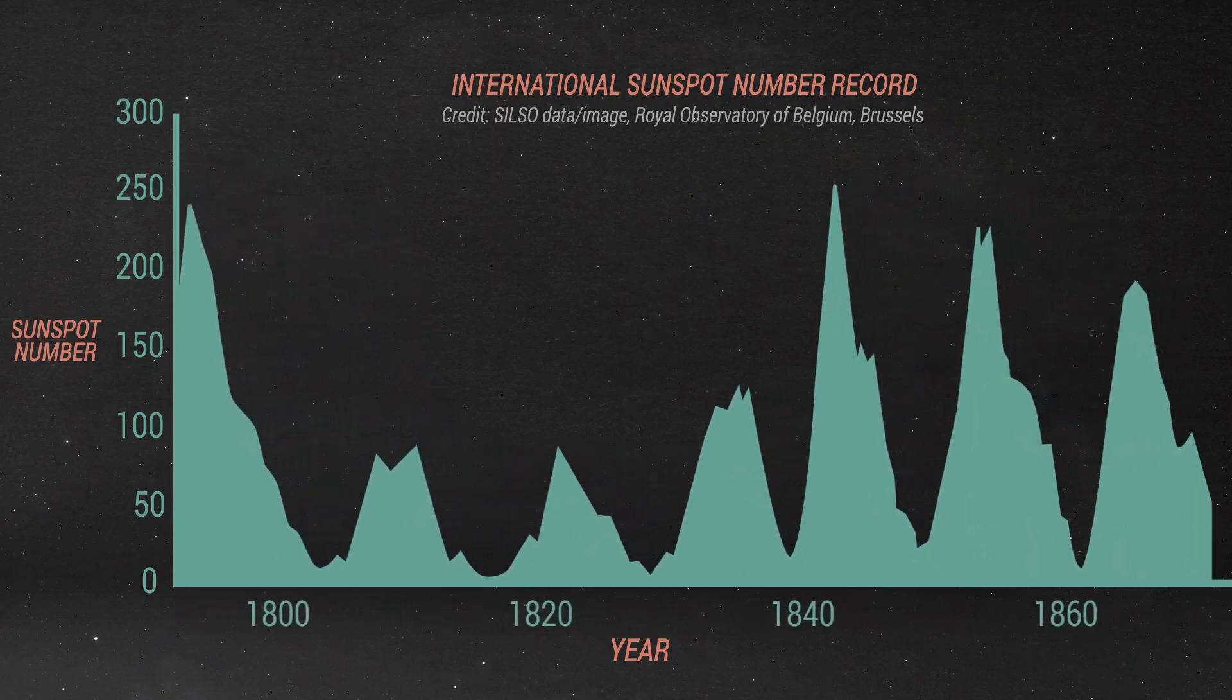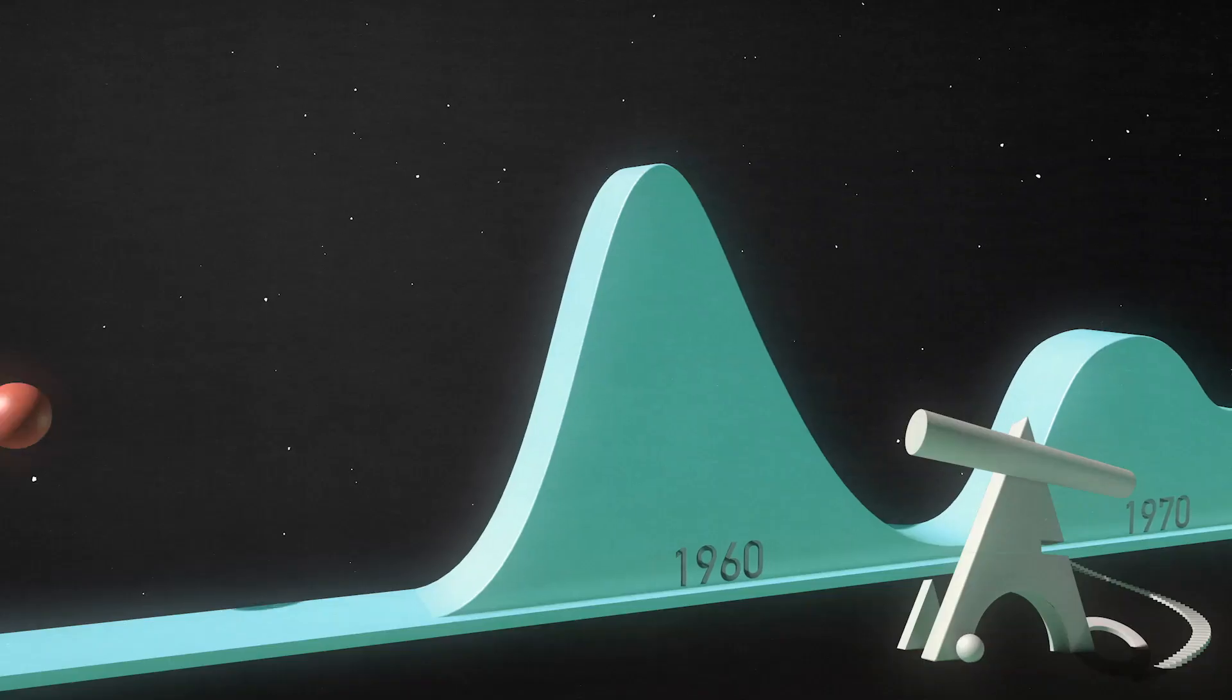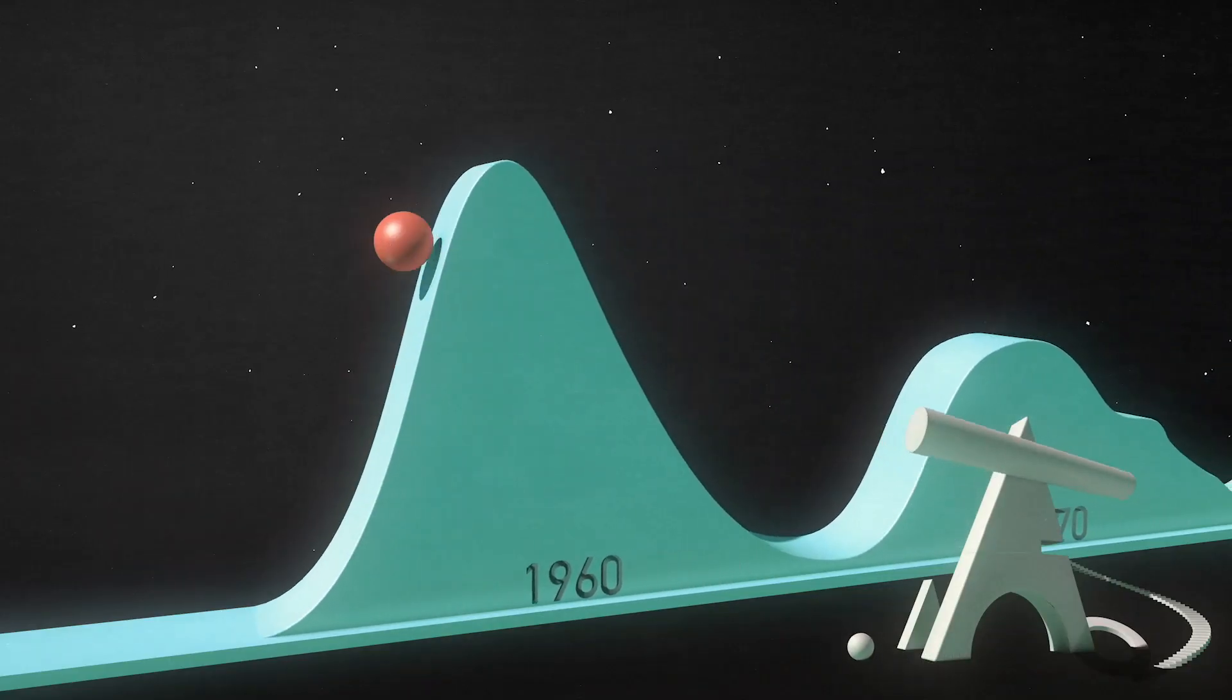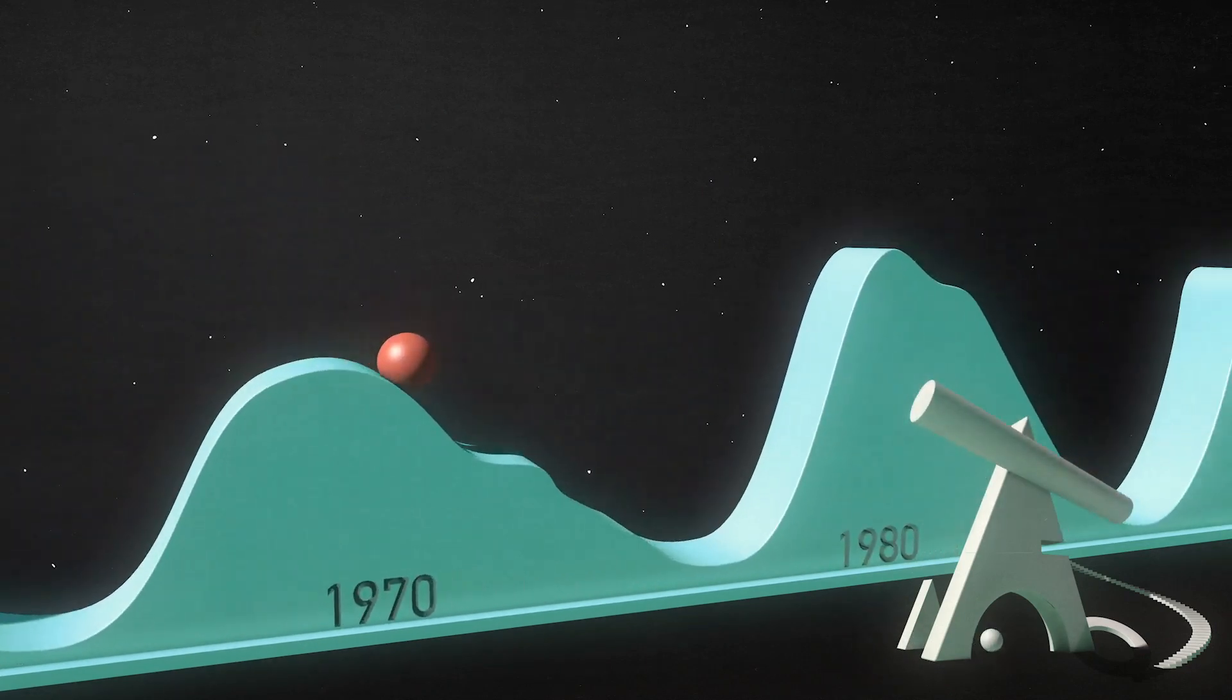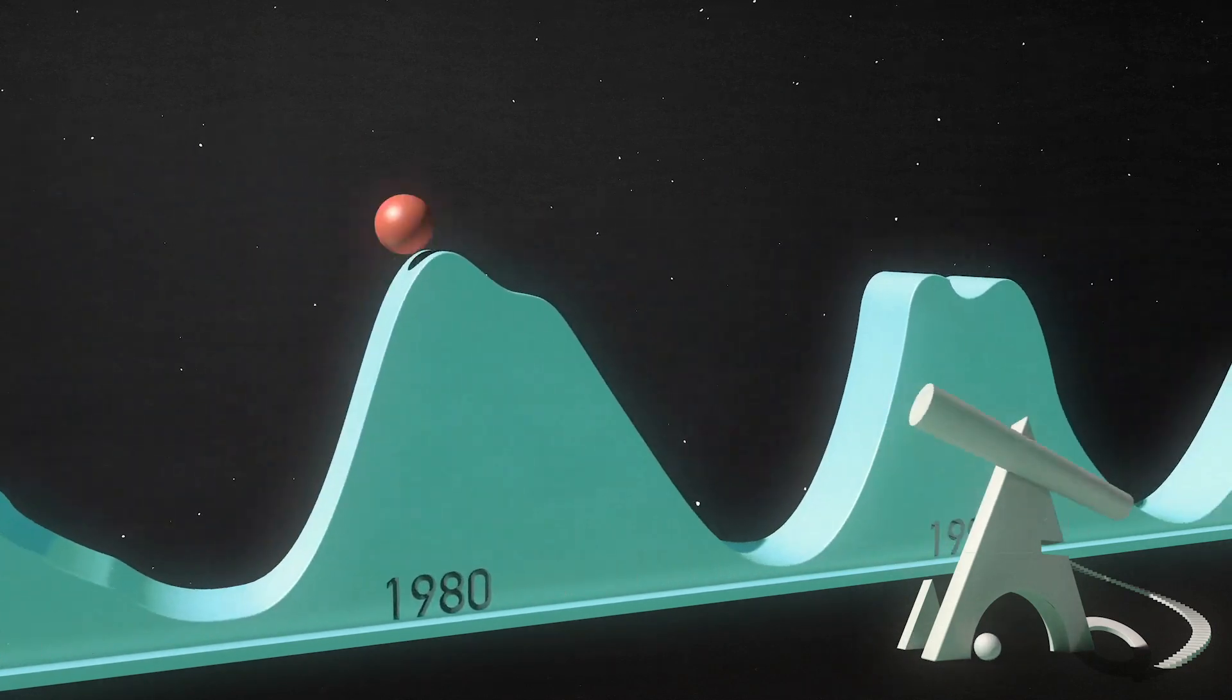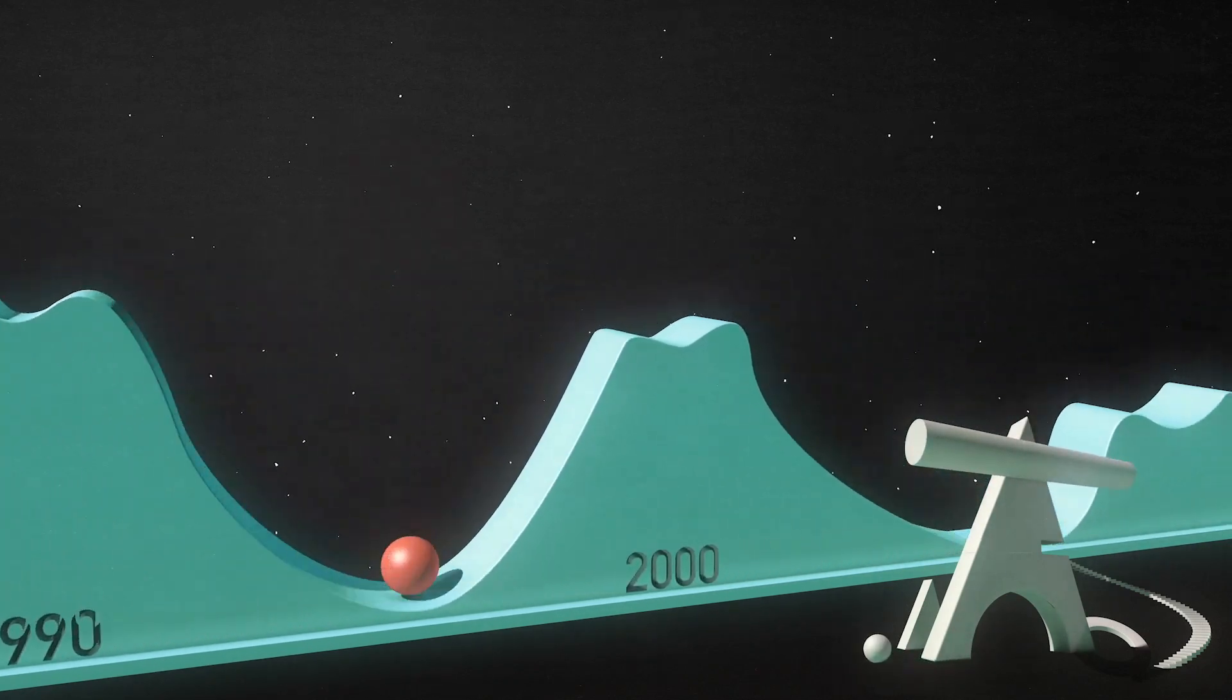Sunspot numbers are collected from observatories around the world and are averaged. During every 11-year cycle, the number of sunspots rise from zero to a peak and then go back down to zero again. Scientists use these numbers to determine when a new solar cycle begins and how active a cycle is.